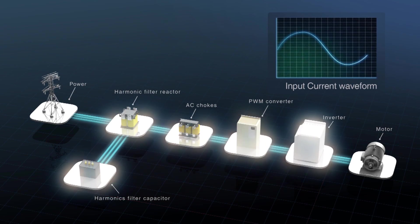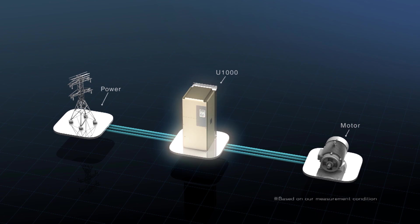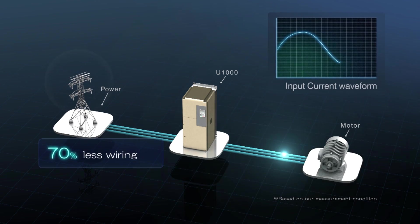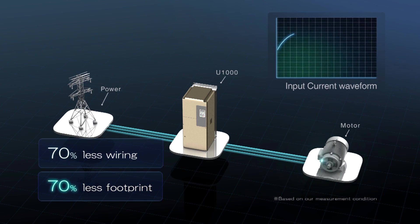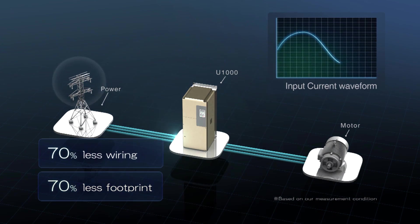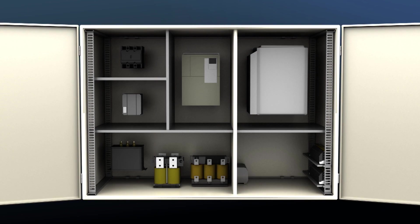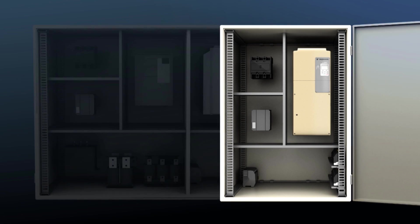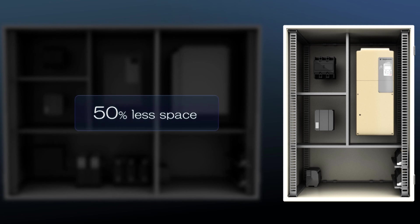The Yaskawa Matrix converter U-1000 realizes a 70% reduction in wiring, a 70% reduction in installation area, and a 50% reduction in physical space.